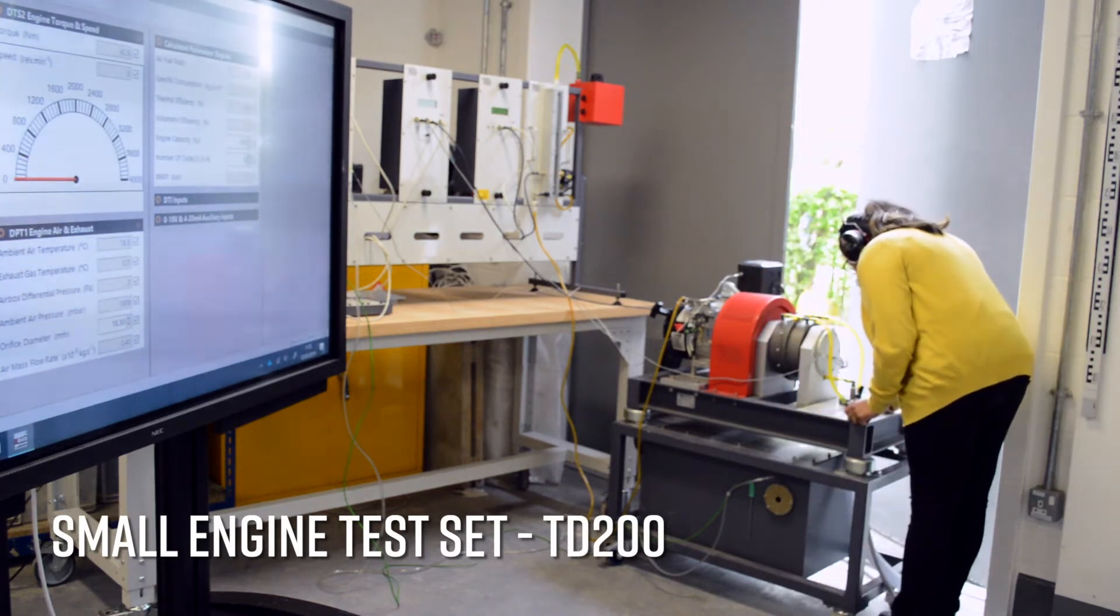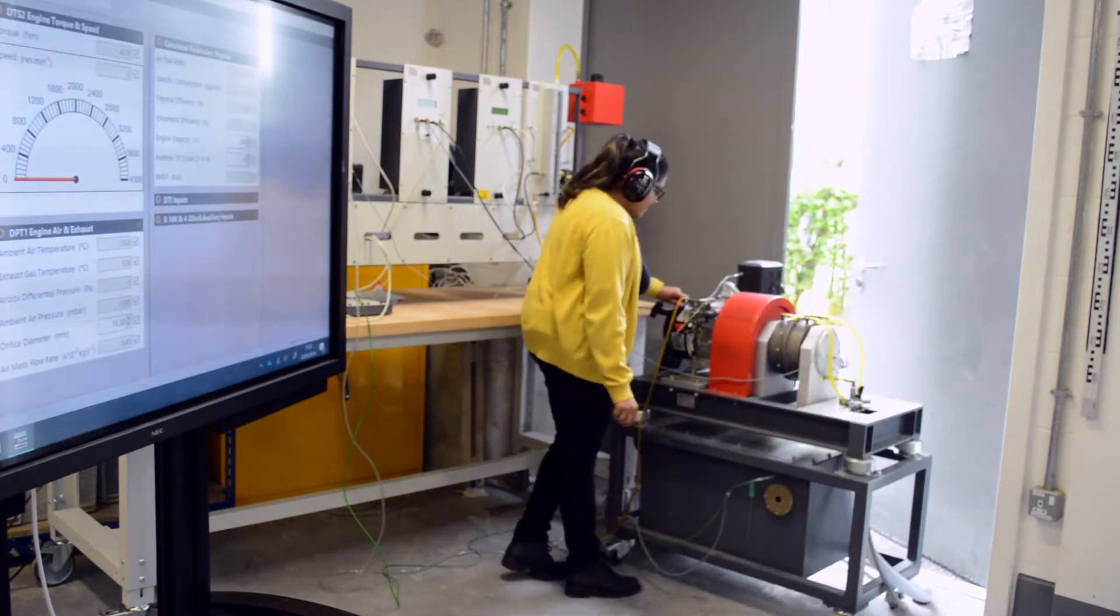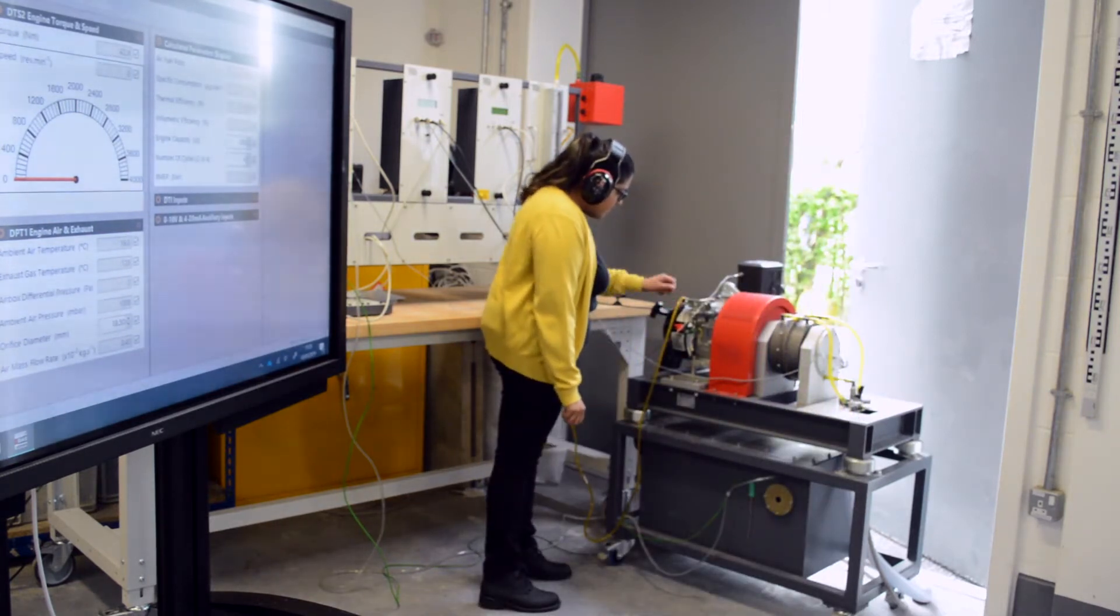The first thing I do is adjust the needle valve, which controls the flow rate and the level of water in the casing. I adjust it to the maximum capacity.